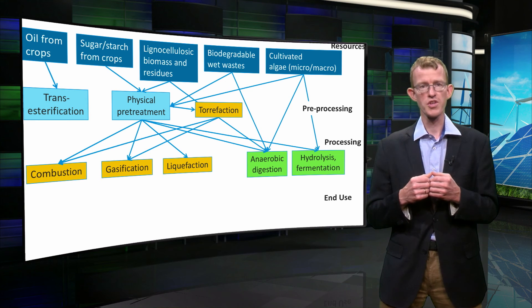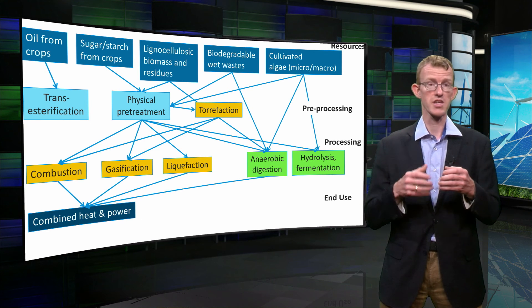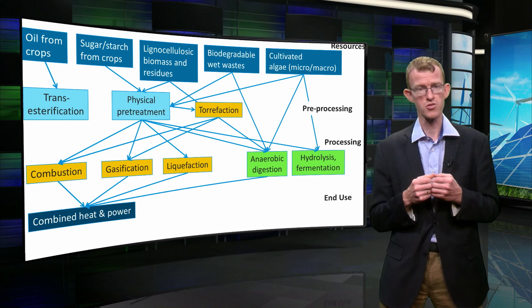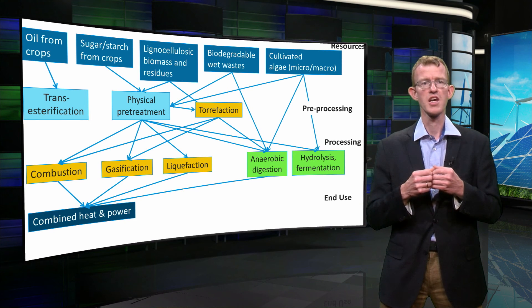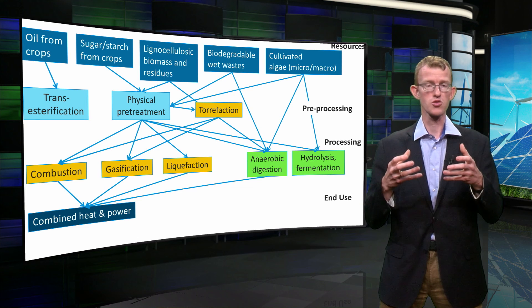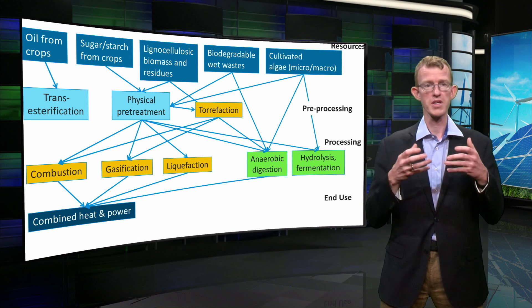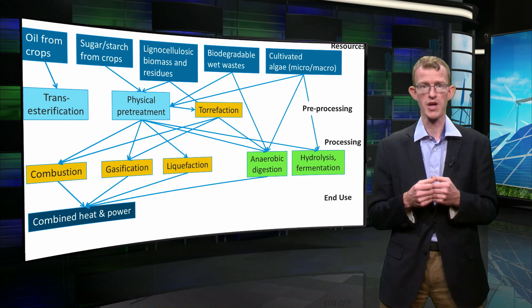All these different technologies can yield different forms of energy. We can, for example, obtain heat, and that can be converted into electricity. And since there is always some waste heat, it is often efficient that this waste heat is also usefully employed, for example by district heating, combined heat and power.